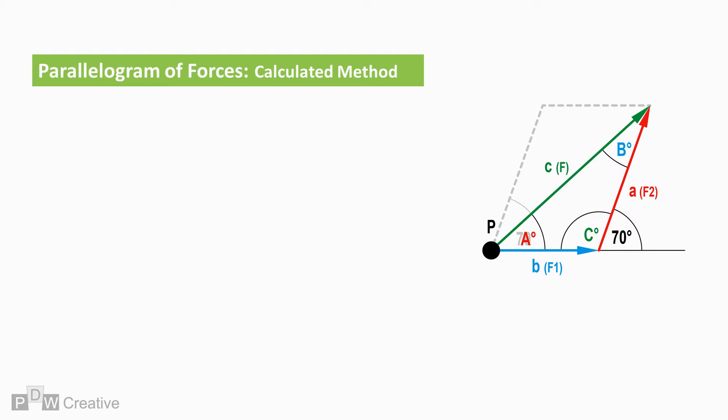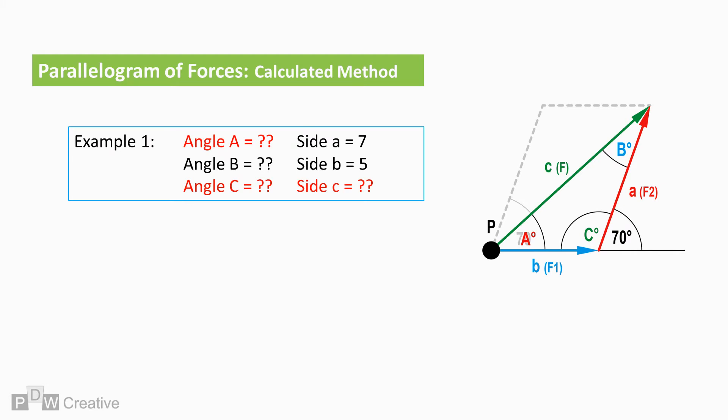Then retitle the angles A, B, and C with capital letters, all angles being opposite a corresponding face. Angle C is a straightforward calculation: deducting the angle of action — 70 degrees — from 180 degrees gives C at an angle of 110 degrees.